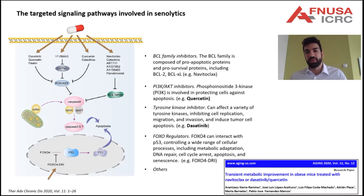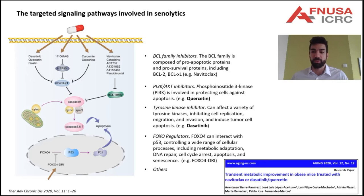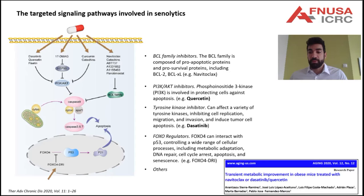The agents used to selectively induce the apoptosis of senescent cells are called senolytics. In the past decade, different senolytic families were discovered, and currently most senolytics can be classified as BCL family inhibitors, PI3K-AKT inhibitors, and FOXO regulators. These senolytics target one or more pro-survival and anti-apoptotic pathways that maintain the senescent cell status. Two of them have been used in combination, showing synergic activity and good efficacy in many in vitro and in vivo models.